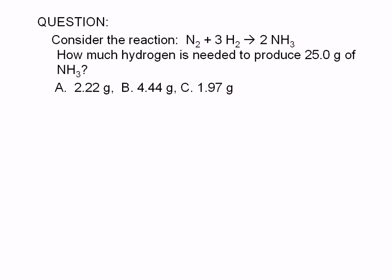Consider the reaction: N₂ plus 3H₂ yields 2NH₃. How much hydrogen is needed to produce 25.0 grams of NH₃? A: 2.22 grams, B: 4.44 grams, or C: 1.97 grams.